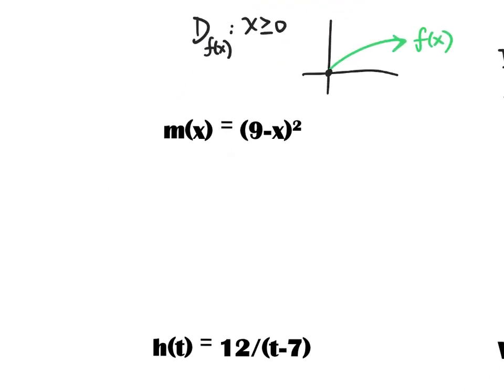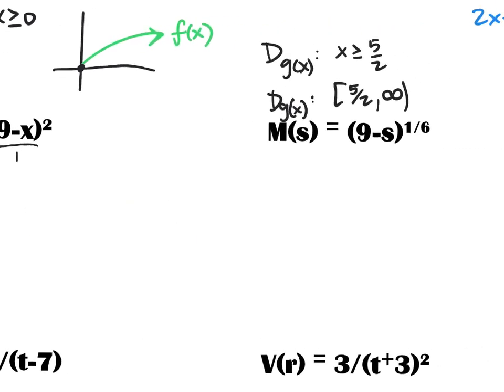For m(x), thinking about our two restrictions: is there an even root? No — x squared is a quadratic form. Am I ever going to divide by zero? No, because there is no denominator — the denominator is effectively one. Therefore the domain of m(x) is all real numbers. No even root, no division by zero in any case.